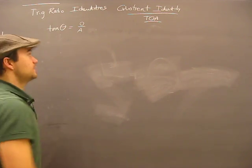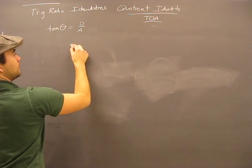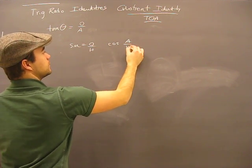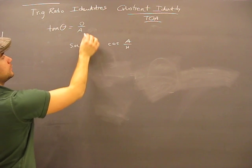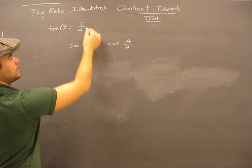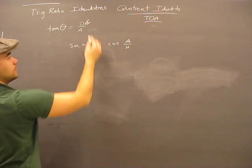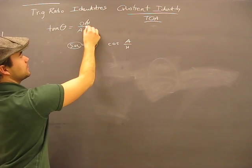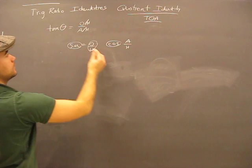Well, I know that sine equals opposite over hypotenuse, and cosine is adjacent over hypotenuse. So what I'm going to do is take this and divide both by H. Now I've got sine, which is O over H, and I've got cosine, which is A over H.